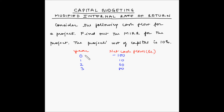The project has a total tenure of three years. In the beginning of the project, there is a cash outflow of 100 rupees. At the end of the first year, there's a cash inflow of 10 rupees. At the end of the second year, there's a cash inflow of 60 rupees, and at the end of the third year, there's a cash inflow of 80 rupees.